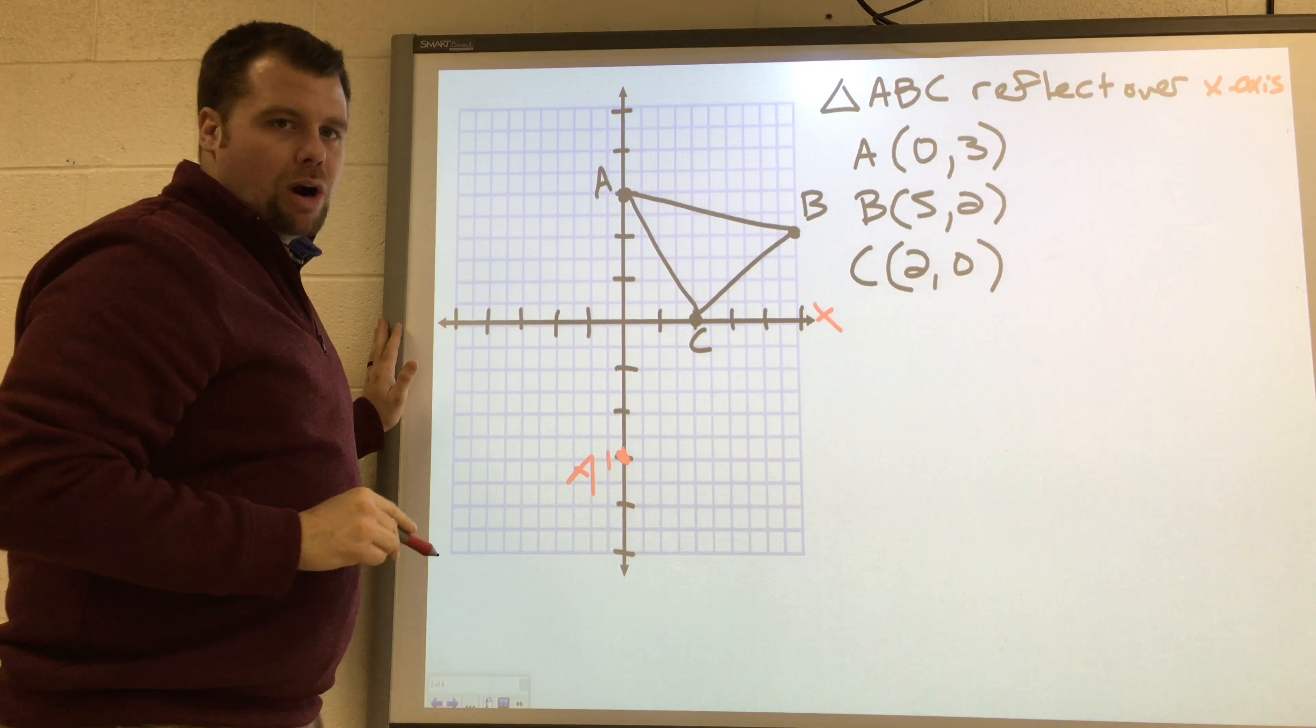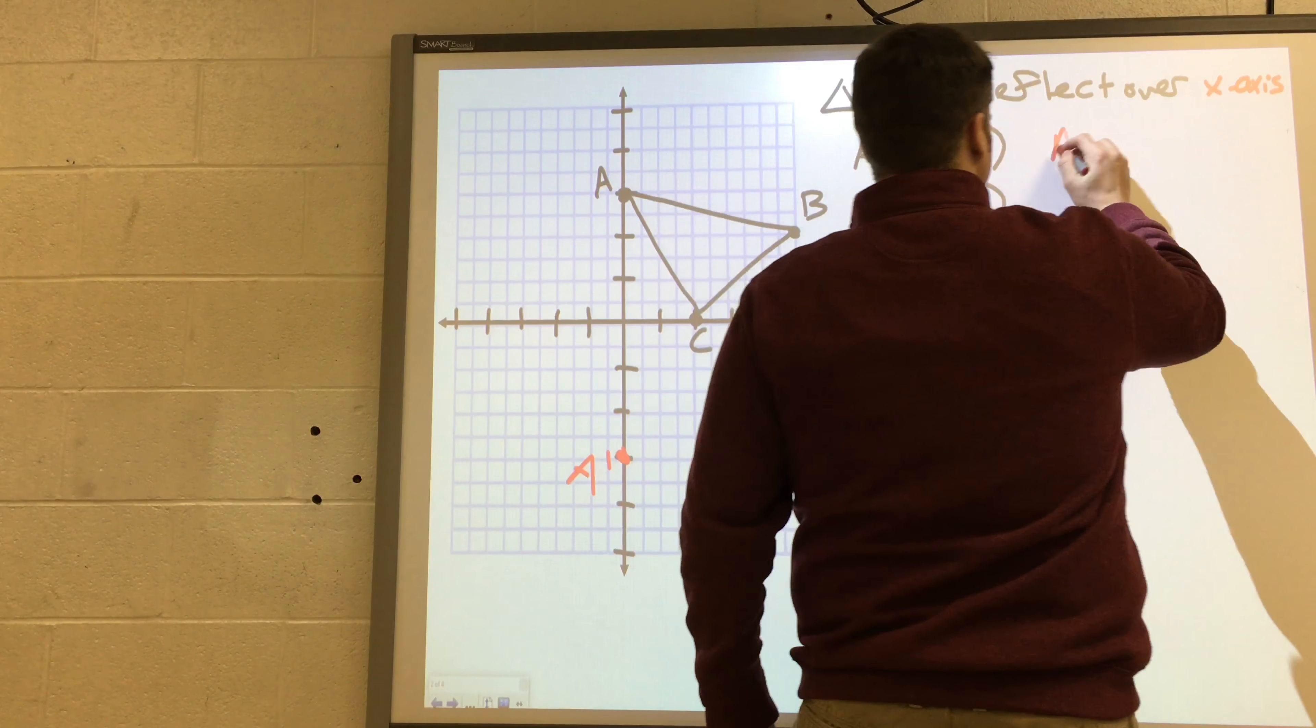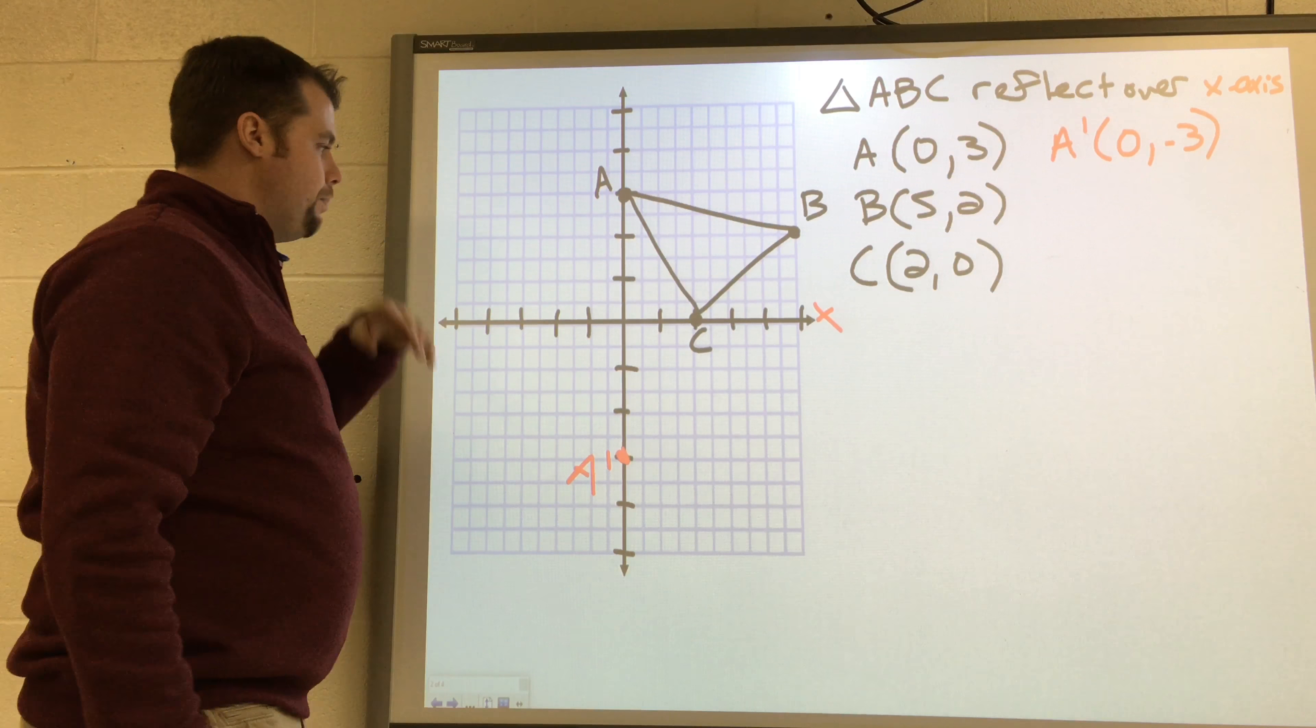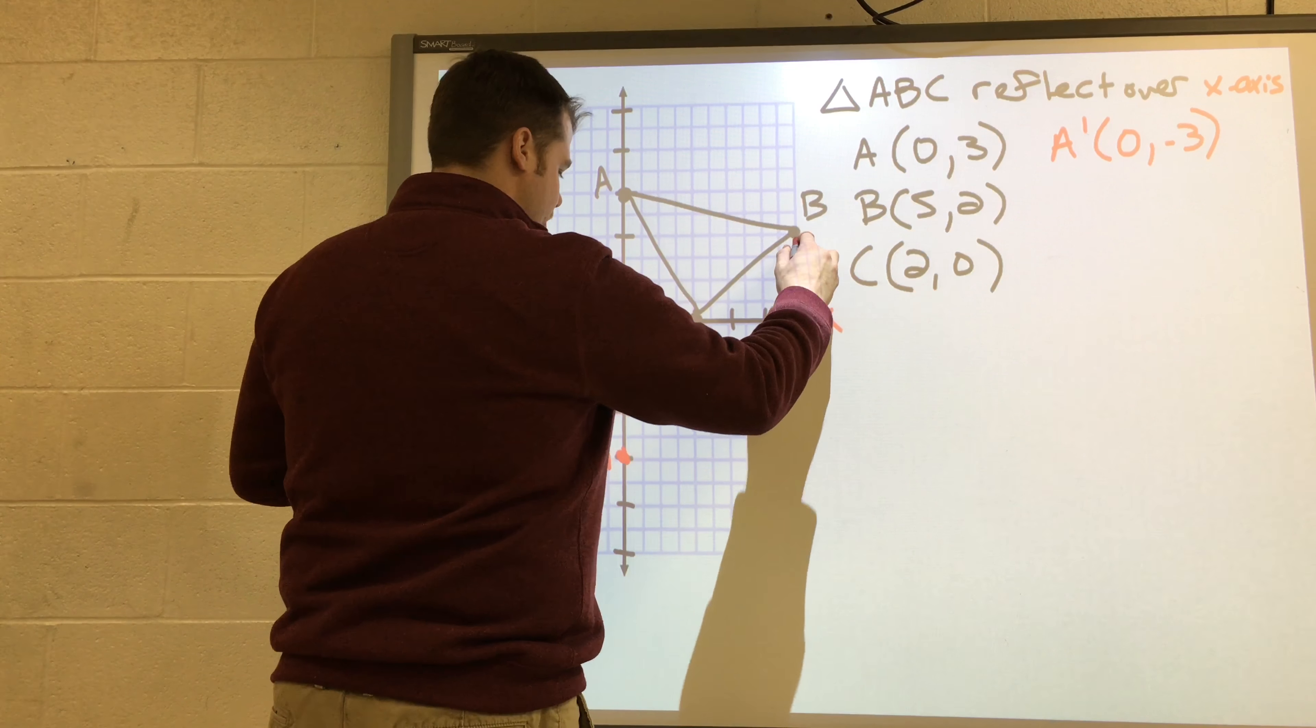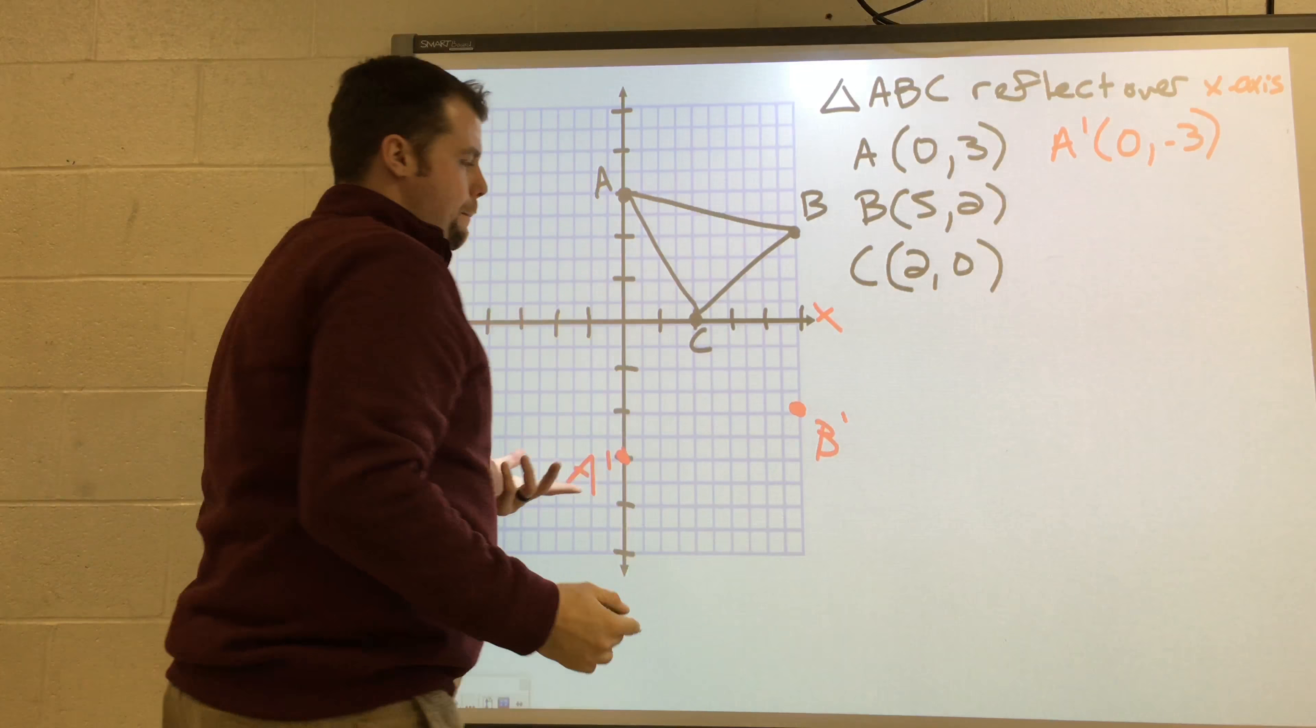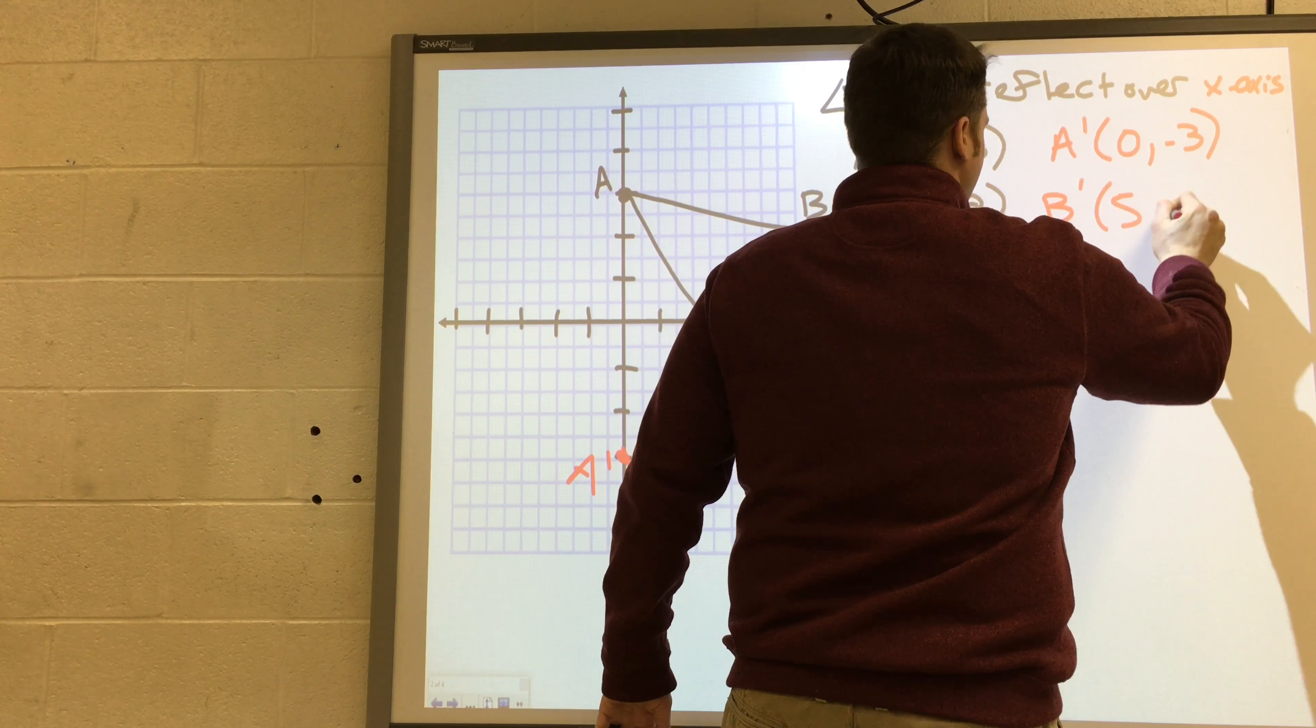I'm going to label that A prime. That point is now zero, negative three. So it was above three units, I moved it below. B is two units above right here. So I'm going to move it two units below, straight down. It's going to be B prime. That point is now five, negative two.